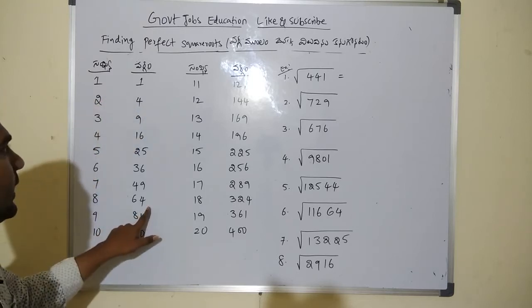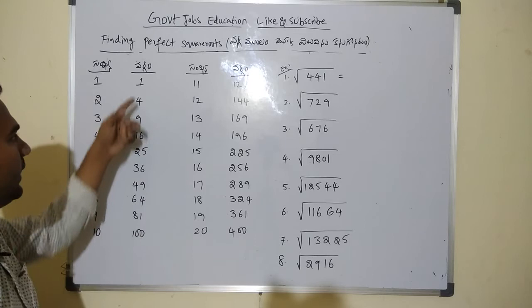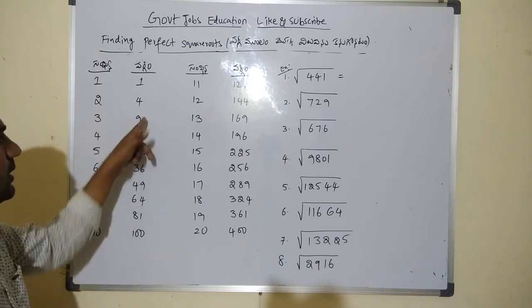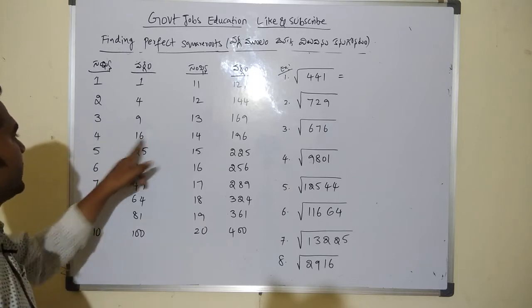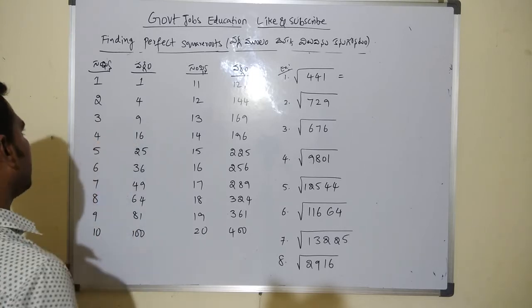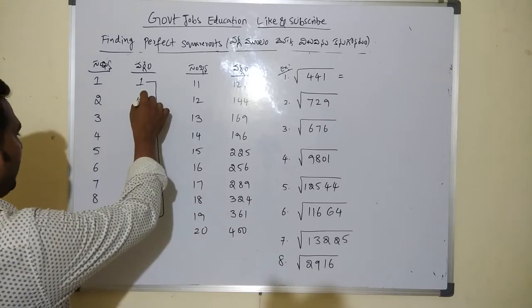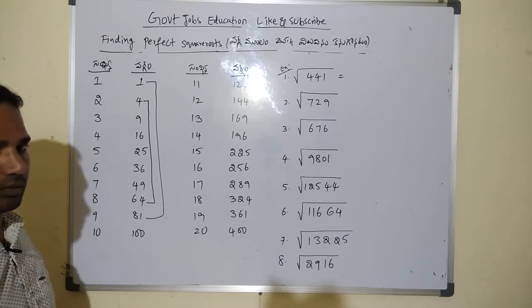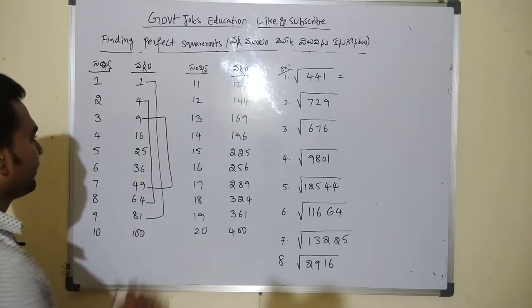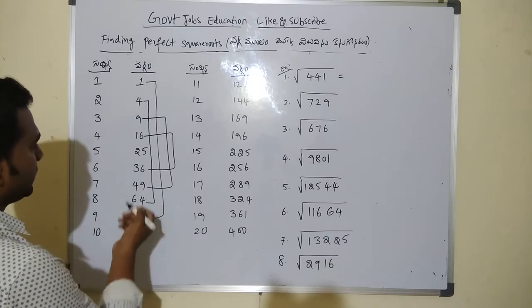For the unit place: 2 square is 4 and 8 square is 64 — so 2 and 8 have the same unit place value of 4. Similarly, 3 square is 9 and 7 square is 49 — so 3 and 7 share unit place 9. Also, 4 square is 16 and 6 square is 36 — so 4 and 6 share unit place 6. And 1 square is 1, 9 square is 81 — unit place 1.